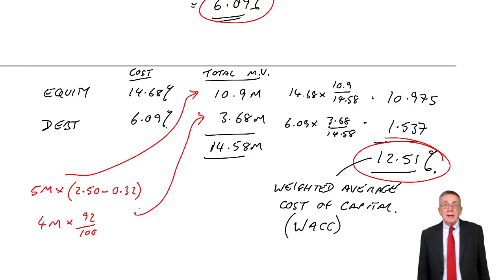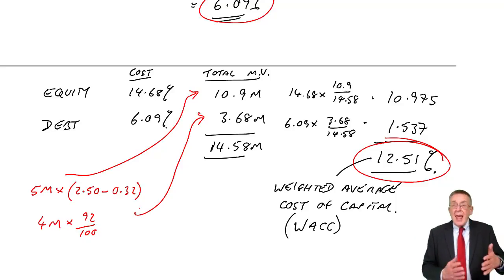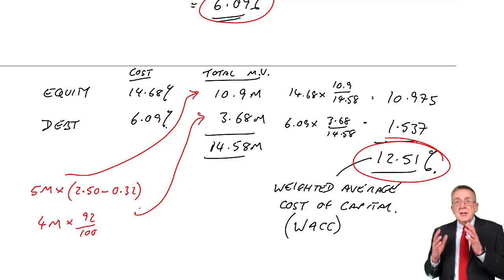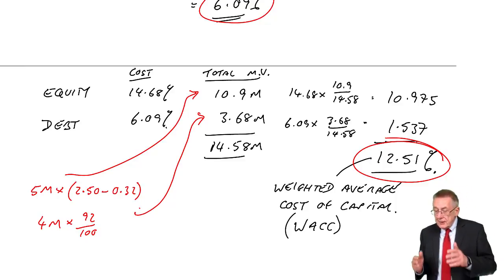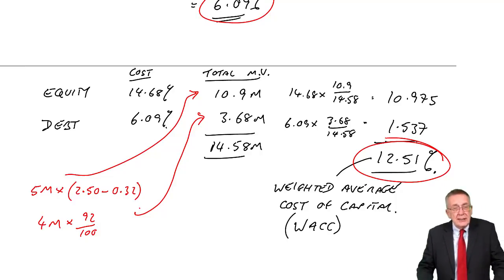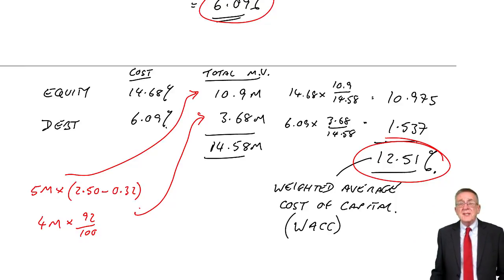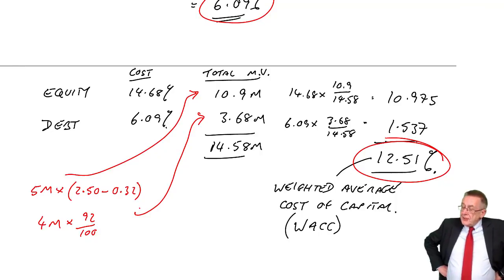But think about what we're doing. I've already said in the earlier lectures, debt, for instance, the fact we were paying eight percent coupon rate was irrelevant. We need to know what return do shareholders, debt lenders, what return are they currently requiring, if they were buying shares or debt on the stock exchange. Equity are currently requiring 14.68 on the stock exchange. We're going to effectively have to give them 14.68 on any new finance we raise.